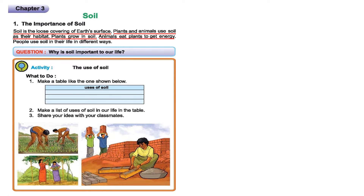First, the importance of soil. Soil is the loose covering of our surface. Plants and animals use soil as their habitat. Plants grow in soil. Animals eat plants to get energy. People use soil in their life in different ways. In this paragraph we have the definition of soil. We live on a planet named Earth and the topmost part of Earth is known as the soil. Soil is quite important for us, plants as well as animals, because we use it as our habitat.